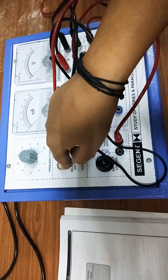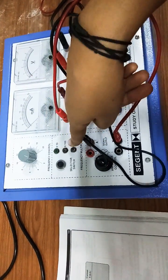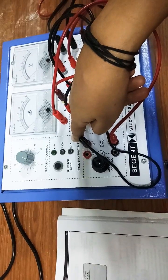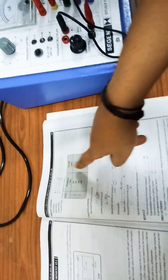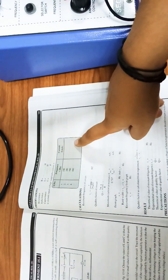And then we can change the different range from this button—it is ten times, hundred times, and one thousand times—and then we'll have respective current.